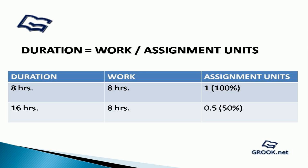Let us say a task requires 8 hours of total work. If a resource works on it for 8 hours — that is at 100 units — then the duration for the task is calculated as 8 hours or 1 day. If the same resource works on it only for 4 hours in a day, that is at 50% units, then the duration for this task is 16 hours or 2 days.